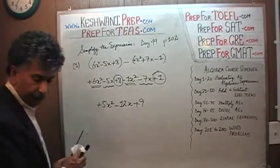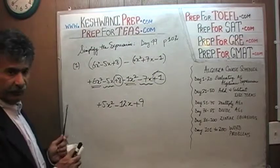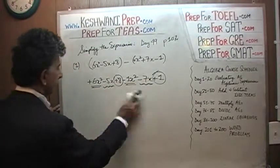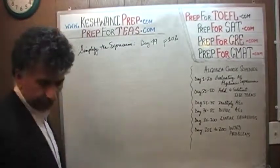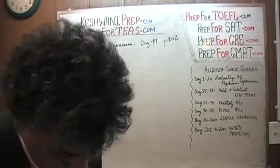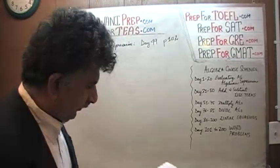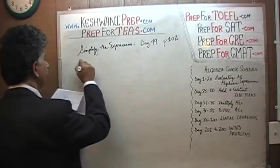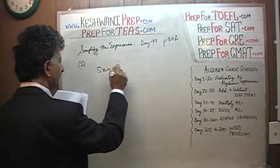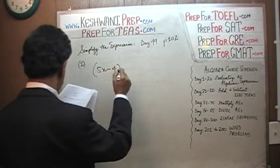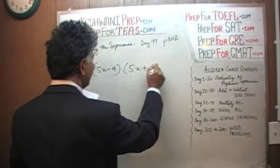That's question number one done. Let's do number two. Number two says: 5x minus 4 times 5x plus 4.